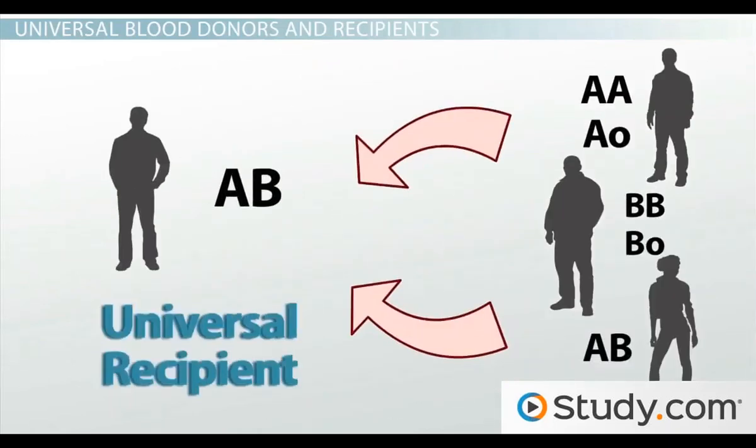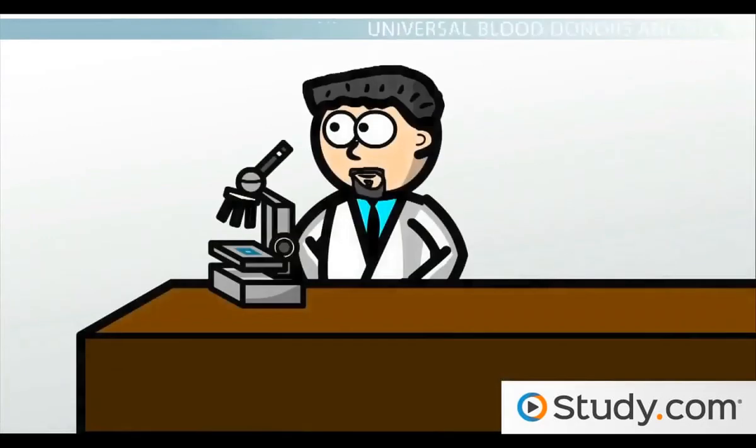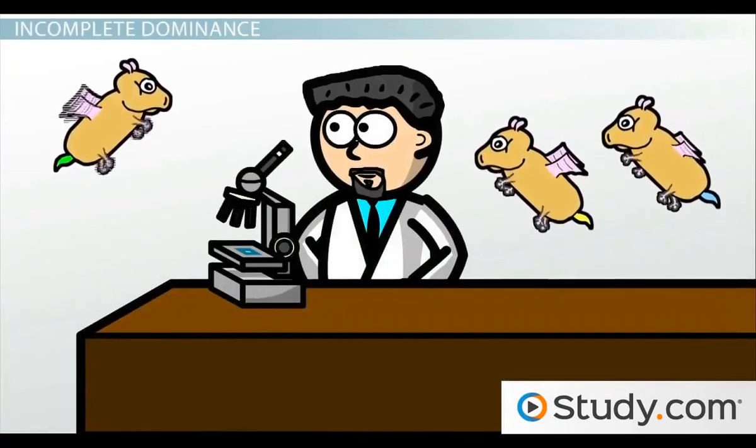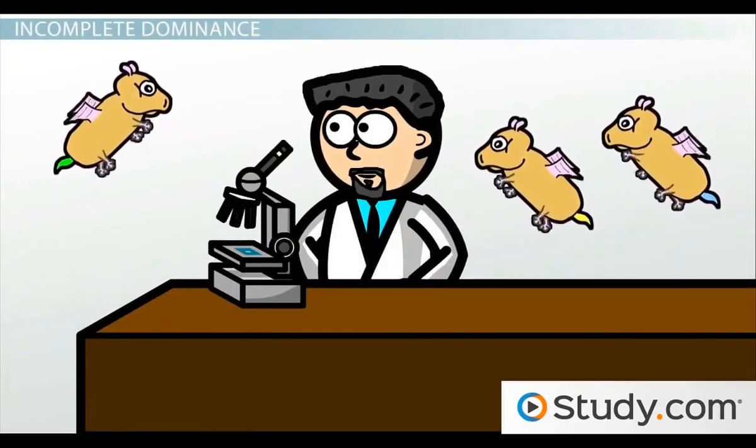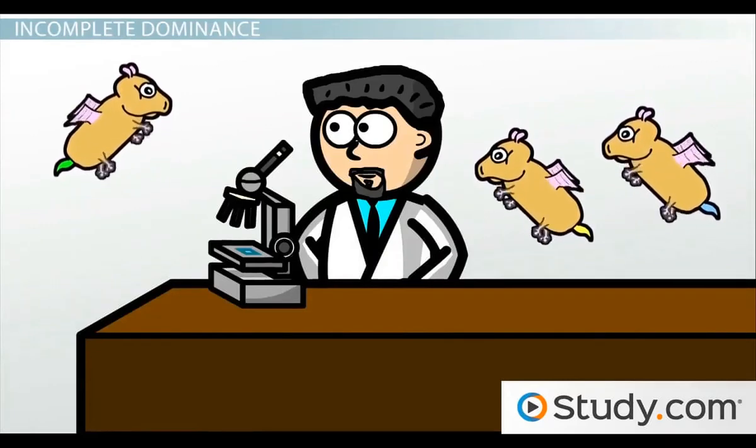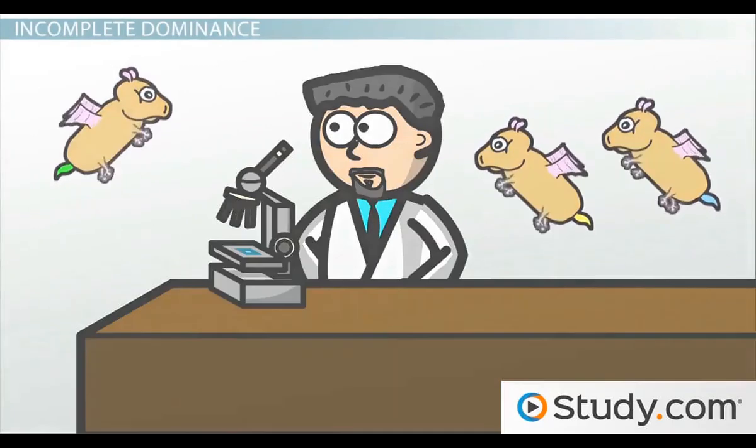We already said that someone with O type blood can receive blood from another O type person, so that means a person who is O type can donate blood to anyone and therefore is called a universal donor. Similarly, since people who are AB type can receive blood of any type, they are called universal recipients. So now that Adrian has learned about ABO blood type, he rushes back to the lab and decides he's going to try to figure out what's going on with this hamster tail color gene. Let's see if we can help Adrian develop a hypothesis for what's going on here.